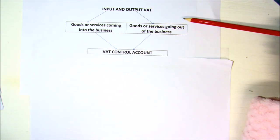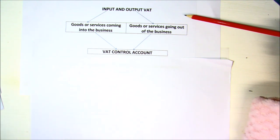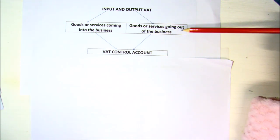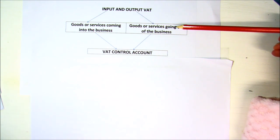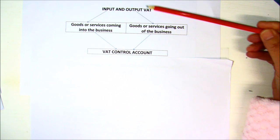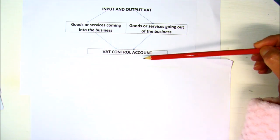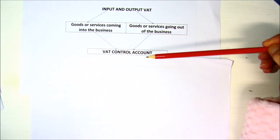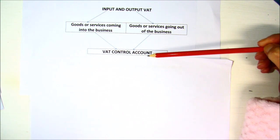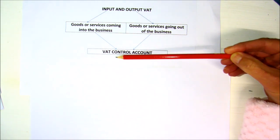On the other hand, your output VAT is on all the goods or services going out of the business. The goods are going out, so that's why it's called output VAT. This is the VAT you collect when you sell your goods or offer services, and that VAT you then owe to SARS. These two ledger accounts then get closed off to a VAT control account in order to work out whether you owe SARS money or SARS owes you money.